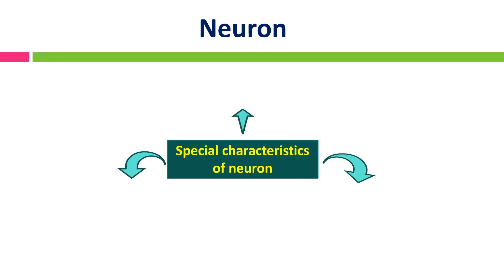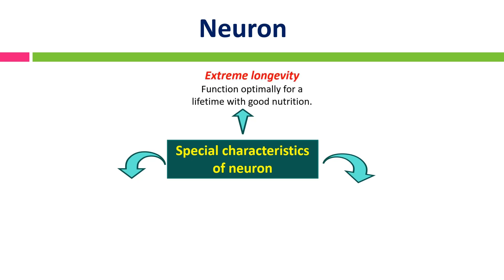There are three special characteristics of neuron. The first is extreme longevity. With good nutrition, neurons can function optimally for a lifetime. Your neurons are as old as you are and will last you for the rest of your life.